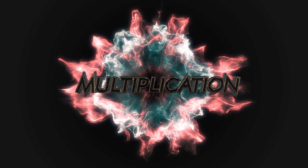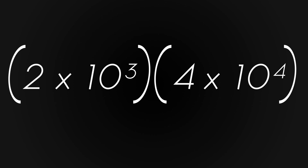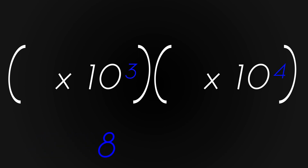All right, that's all well and good. We know how to express a single number in scientific notation, but how would we multiply? Let's multiply 2 times 10 to the 3rd by 4 times 10 to the 4th. To do this, you multiply the first number in each pair — 2 times 4 equals 8, so you bring that down. Next, you add the exponents on each number: 3 plus 4 equals 7, so you bring a 10 raised to the 7th down there, and you're done.